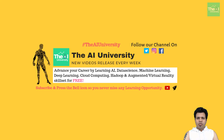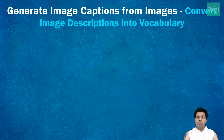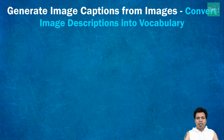Hello folks, this is Part 2 of the building image caption deep learning model series. I will be covering code related to loading image descriptions, cleaning text to remove punctuations and words containing numbers, and converting image descriptions into a vocabulary of words so that the embedding layer of the LSTM model can understand word tokens to generate correct captions for images.